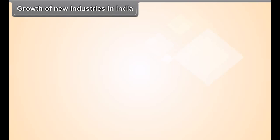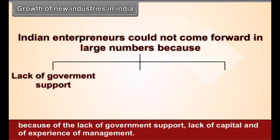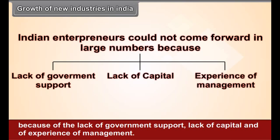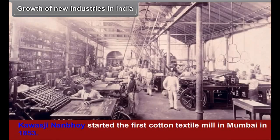Growth of New Industries in India. Indian entrepreneurs could not come forward in large numbers because of the lack of government support, lack of capital and of experience of management. But there were some Indians who overcame these difficulties and succeeded in laying the foundation of Indian industries. Gawasji Nanabhoi started the first cotton textile mill in Mumbai in 1853.